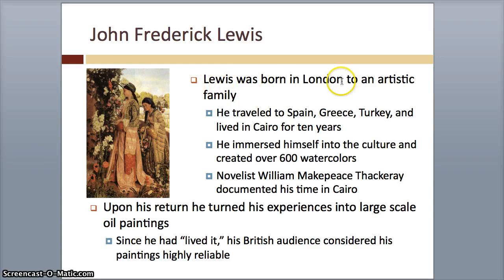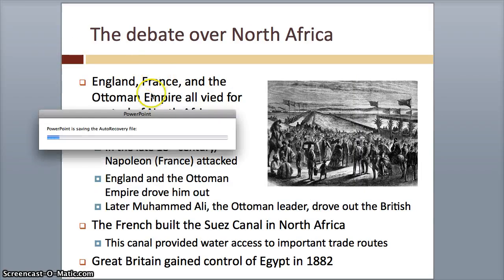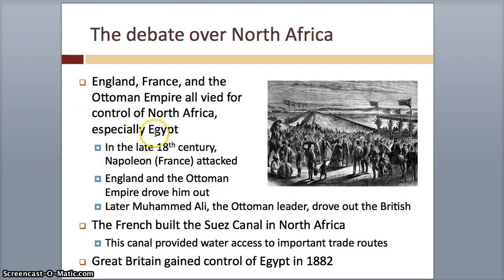John Frederick Lewis was born in London to an artistic family. He traveled and immersed himself in the culture, creating over 600 watercolors. Upon his return, he turned his experiences into large-scale oil paintings. Since he lived it, his audience said this is reliable, true work. The debate over North Africa involved England, France, and the Ottoman Empire, all vying for control of North Africa, especially Egypt. In the late 18th century Napoleon attacked; England and the Ottoman Empire drove him out. Later, the Ottoman leader Muhammad Ali drove out the British. The French built the Suez Canal in North Africa, providing water access to important trade outlets, and then Great Britain gained control of Egypt.